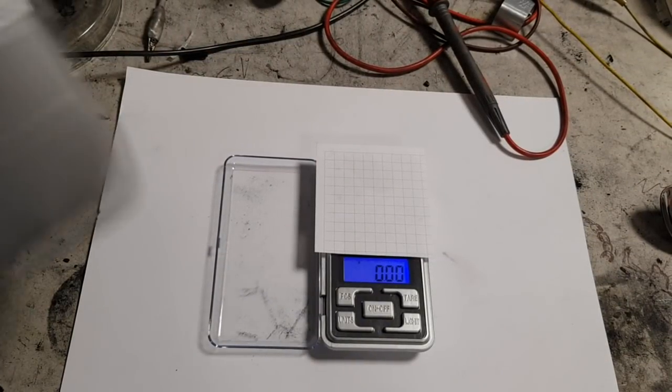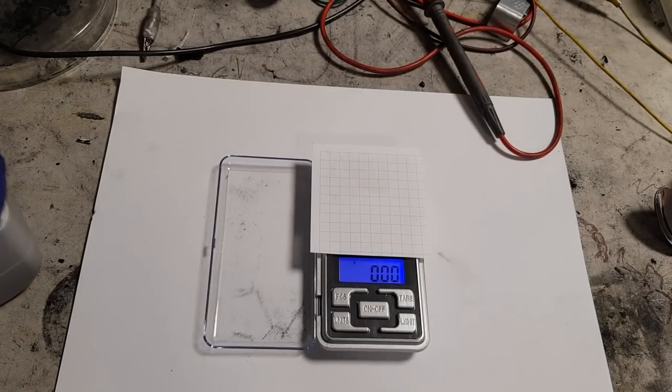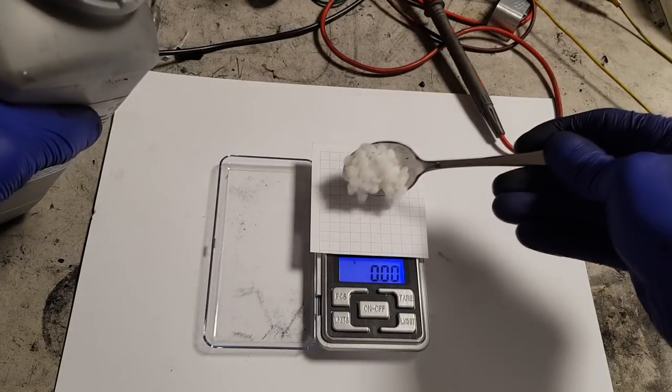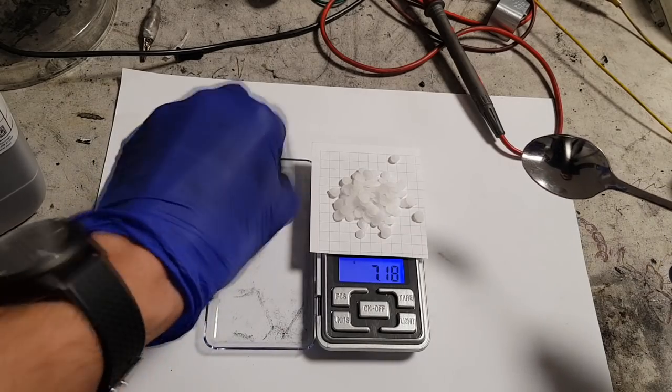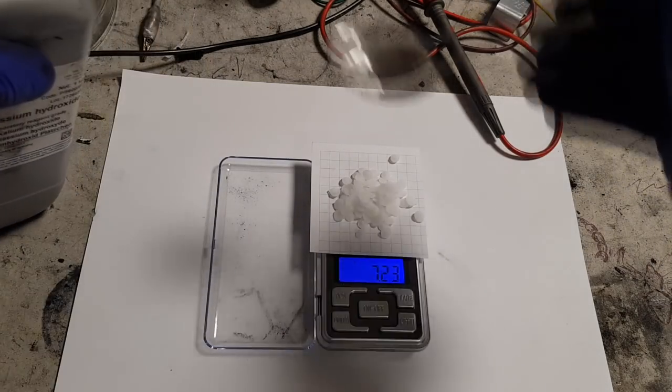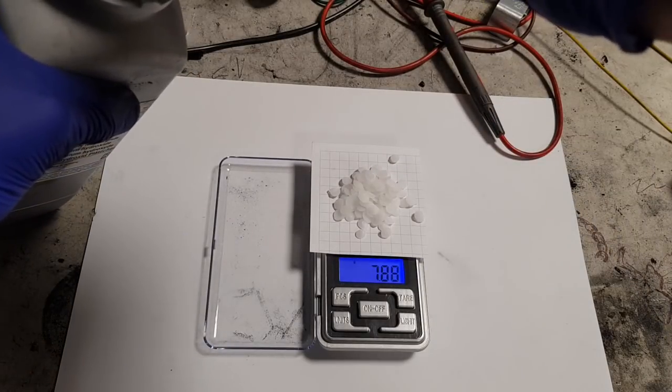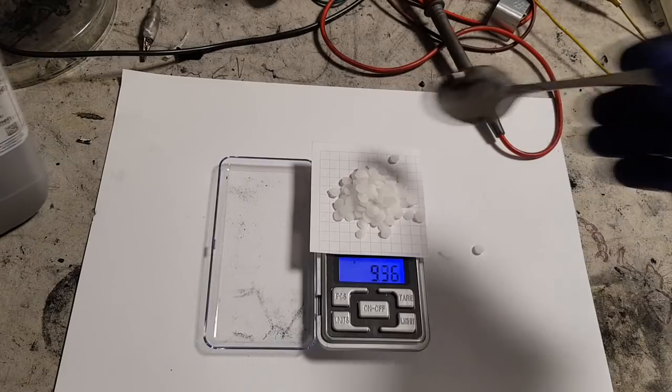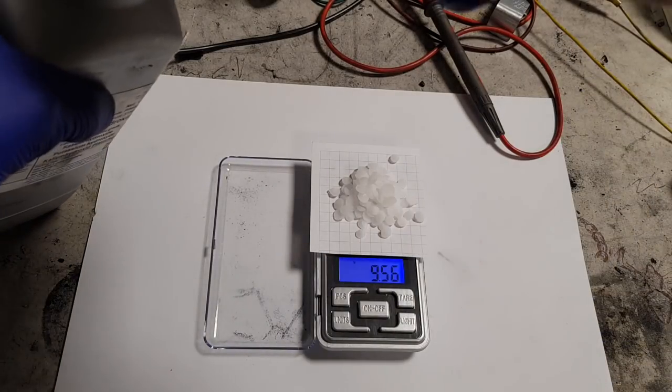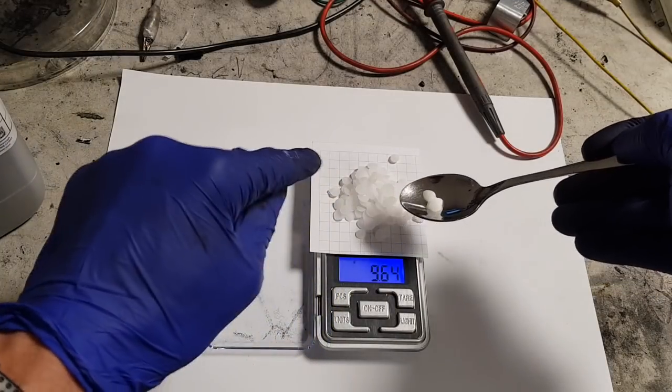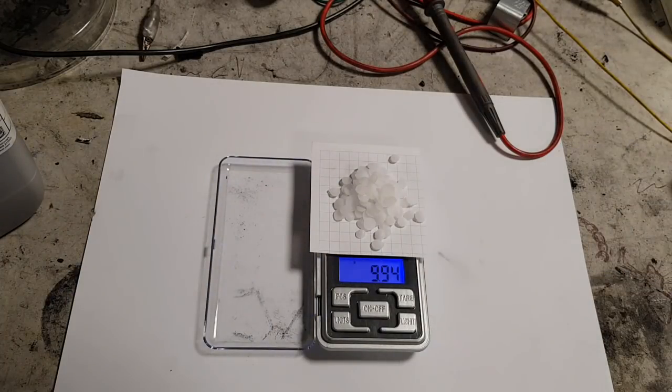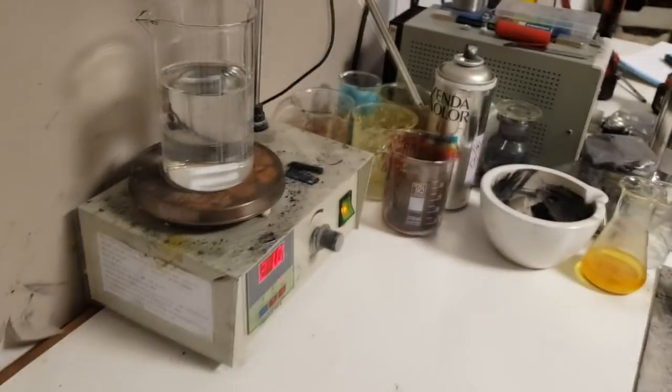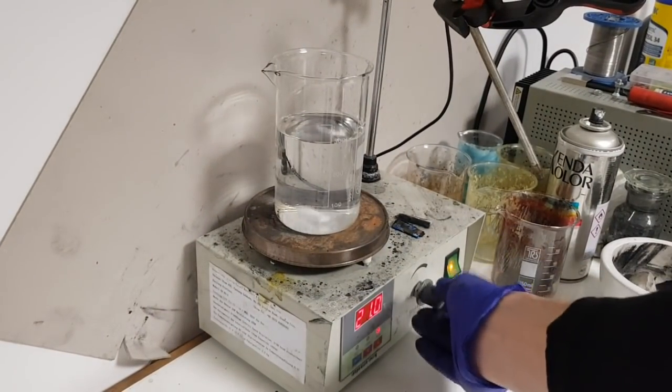measure the quantity of potassium hydroxide. We need 10 grams of potassium hydroxide. So right now I have 10 grams of potassium hydroxide which I will put here. I will start with mixing.